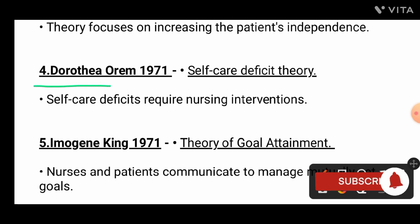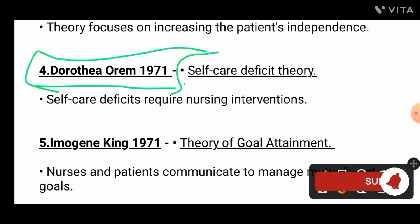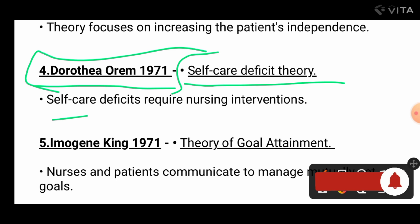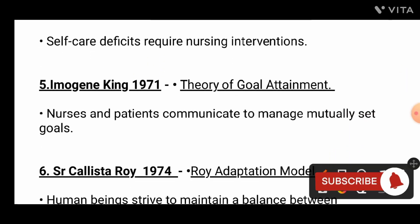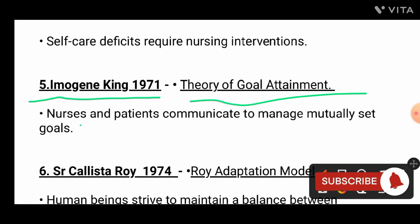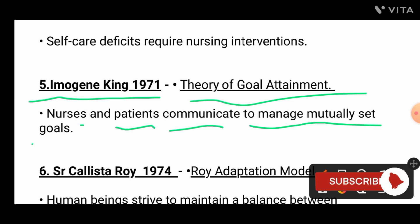Number four: Dorothea Orem, 1971 — the Self-Care Deficit Theory, which requires nursing intervention. Number five: Imogen King, 1971 — the Theory of Goal Attainment, where nurses and the patient communicate to manage mutually set goals.